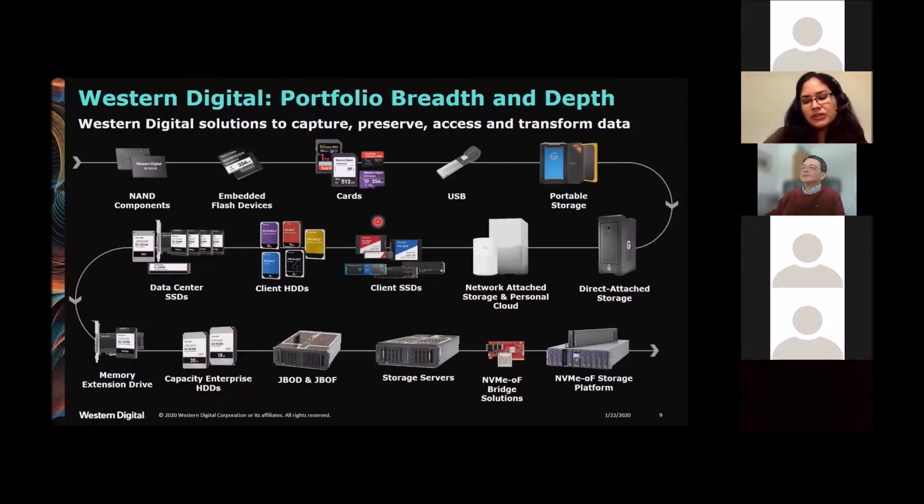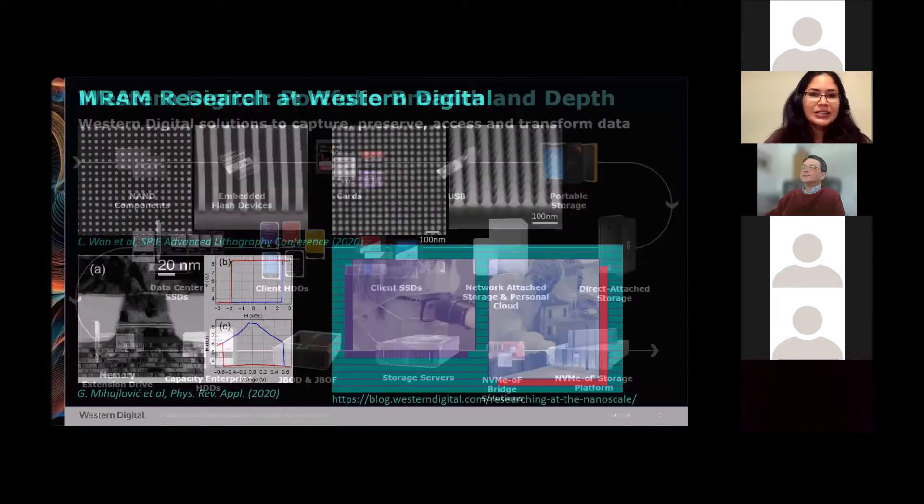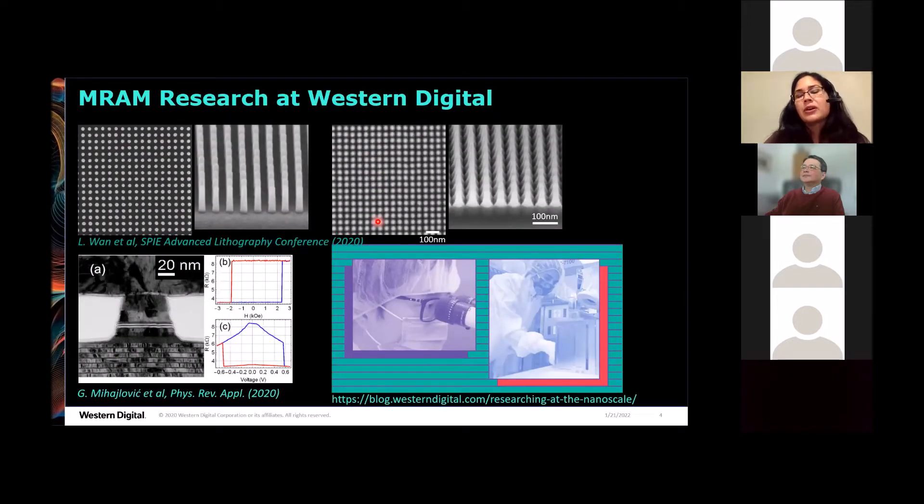So I am at Western Digital in California. Western Digital is a data storage company. Our main products in mass production are hard disk drives, which are a magnetic data storage device, and solid state drives, which are based on NAND flash. I will not be talking about these products today. Instead, I'm very excited to tell you about the work, the cool things we're doing in MRAM in the research division of Western Digital.